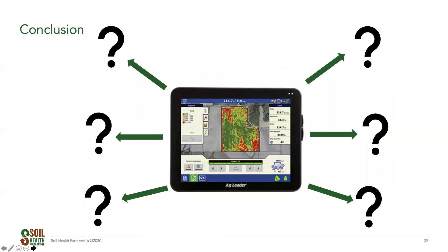Yield can be an answer, but yield is only a snapshot of the 40-plus management decisions and the weather for the last 150 to 200 days. Good yield data drives the person evaluating it to create questions that can be answered — or disproved — through additional analysis. We hope today has helped you understand the variations in yield data from monitor to map, the need to take yield from a raw resource to a finished product before using it as a decision tool, and some ideas for how you might use yield data to evaluate and learn from your operation.